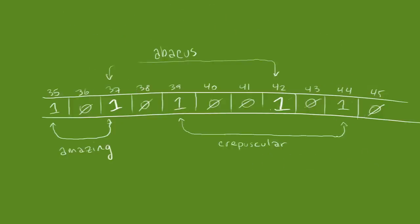But what happens if we want to delete something from our filter? Well, we can't. We might accidentally delete a bit that some other hash function set, at which point we wouldn't be able to guarantee that a zero means this value definitely doesn't exist anymore.